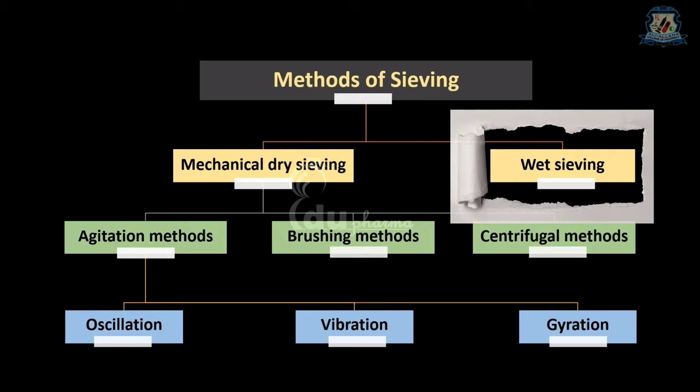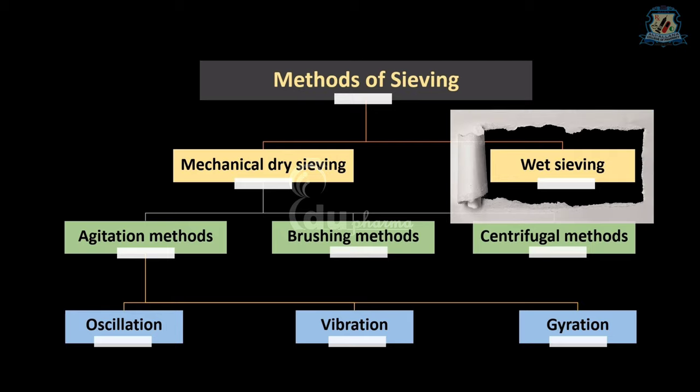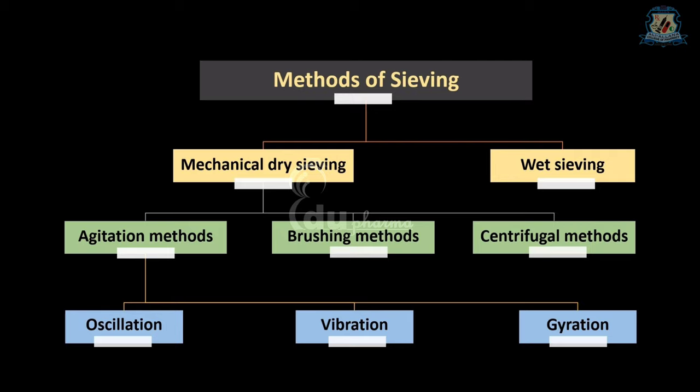The second sieving method is wet sieving. Wet sieving is more efficient than the equivalent dry process, as particles being suspended readily pass through the sieve with less binding to the mesh.